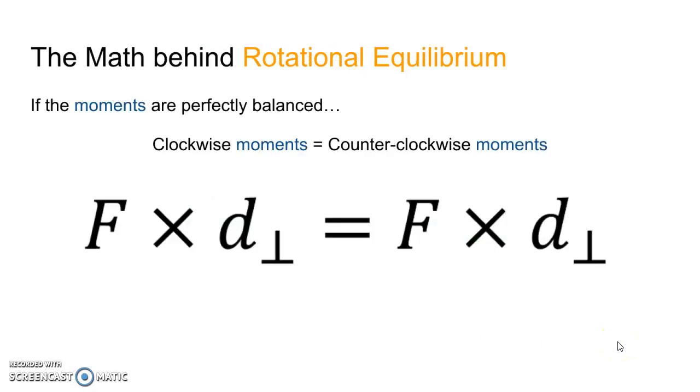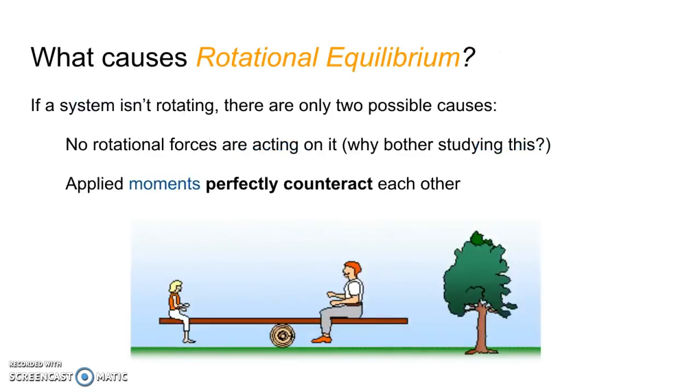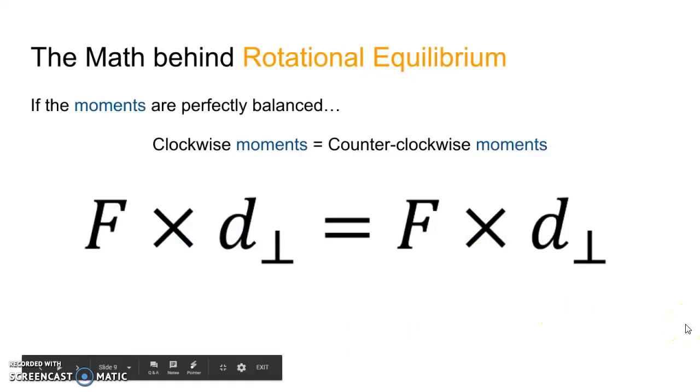If the moments are perfectly balanced, what we would do then is say, let's go back to this example. I want you to notice here that this person, if she was the only one on the seesaw, would cause this seesaw to come and rotate this way. It would cause a counterclockwise rotation. So we say that she is providing a counterclockwise moment. Likewise, this giant over here, if he's the only one on the seesaw, he would force the object to rotate this way. That would be a clockwise moment. What we would do mathematically then is say if those two things are perfectly balanced, that means the force times the distance for the clockwise is equal to the force times the perpendicular distance counterclockwise. We would set those two equal to each other and we would solve for the unknown.